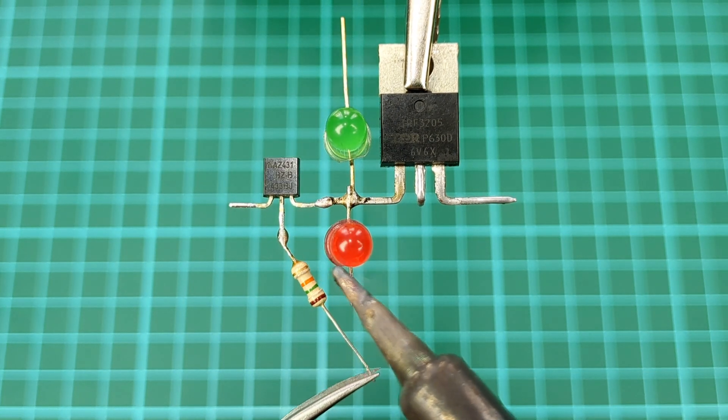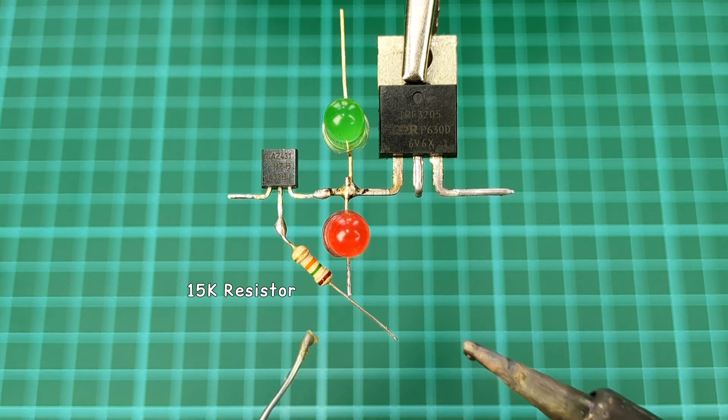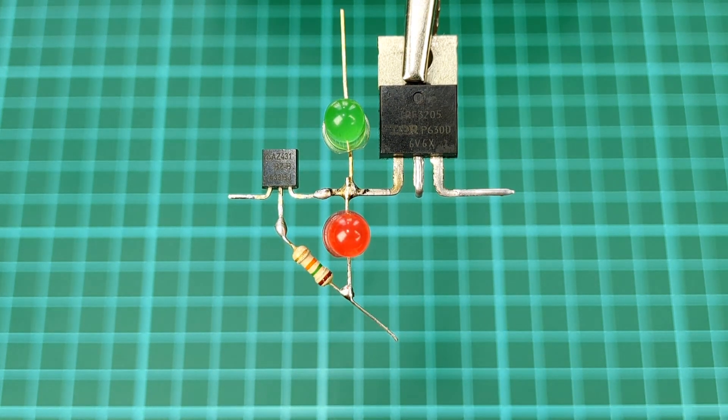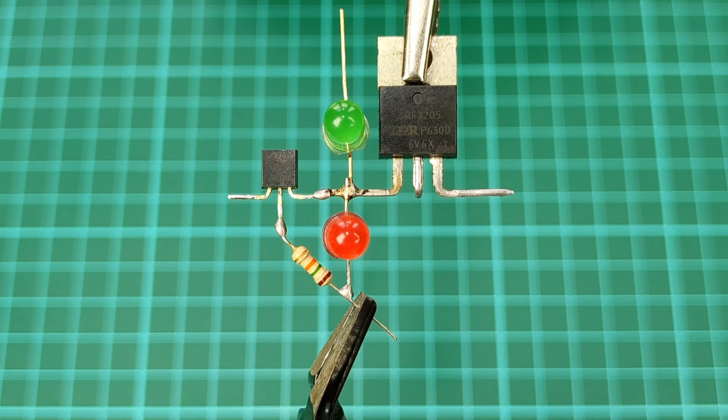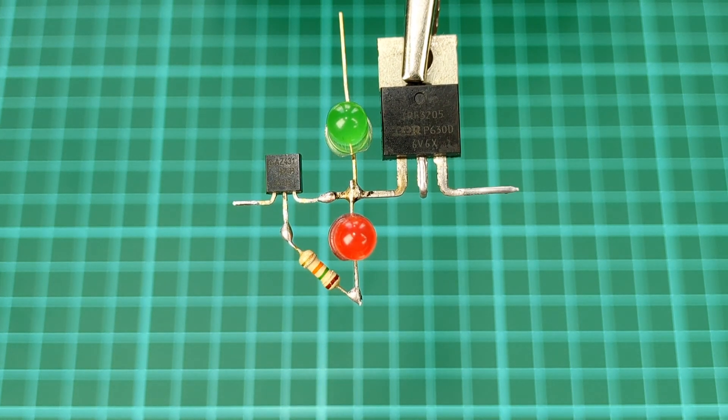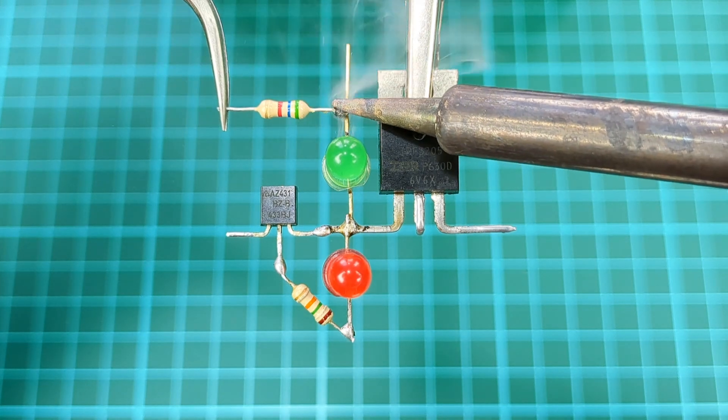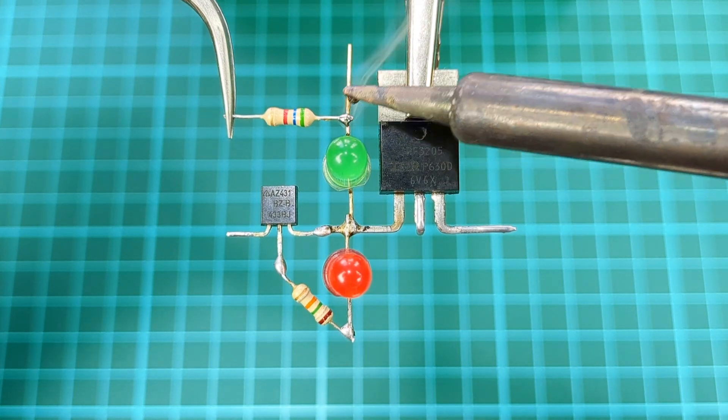Now connect 15 kilo ohms resistor from second pin of shunt regulator to the negative pin of the red LED. Take a 5.6 kilo ohms resistor and connect to the positive leg of LED.